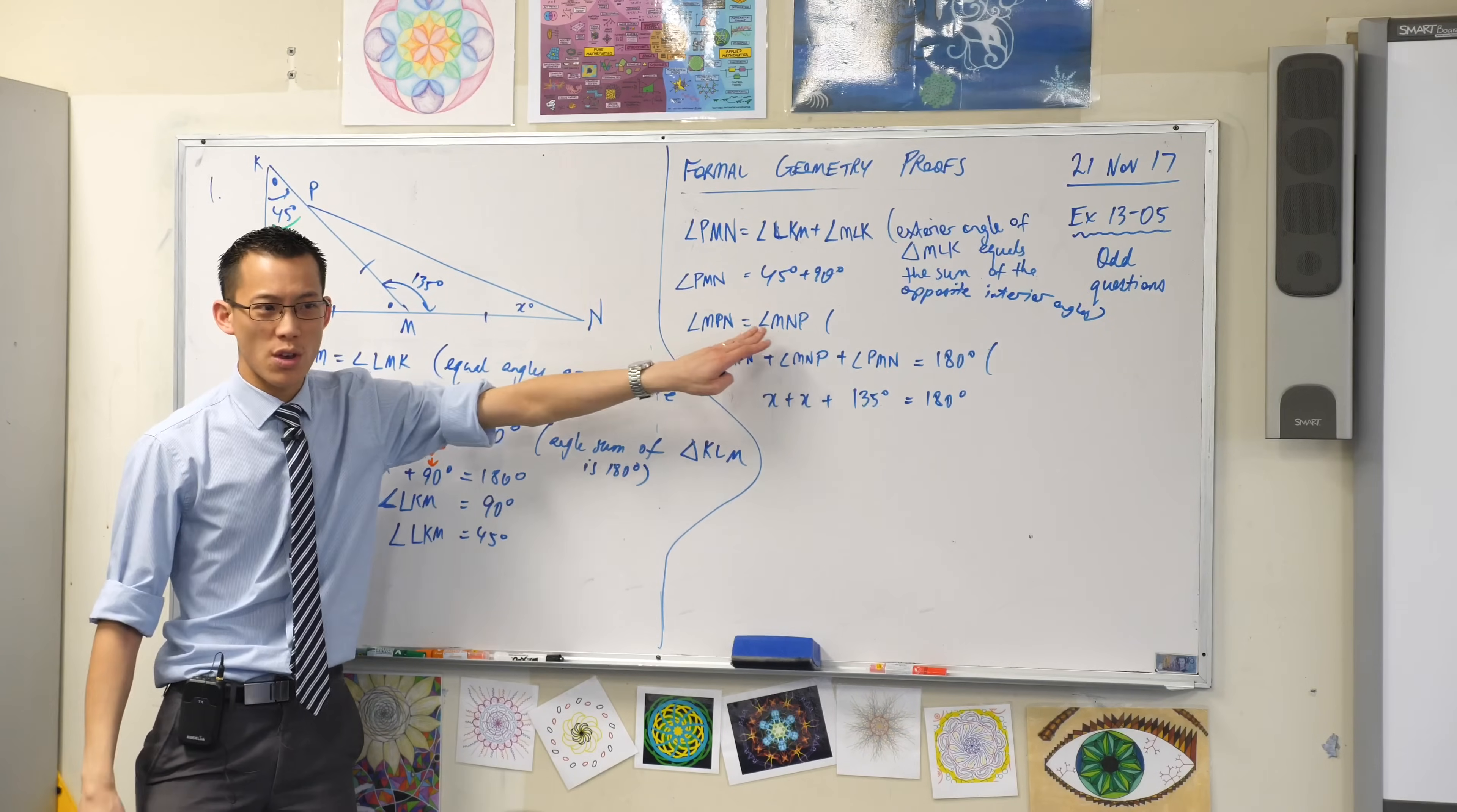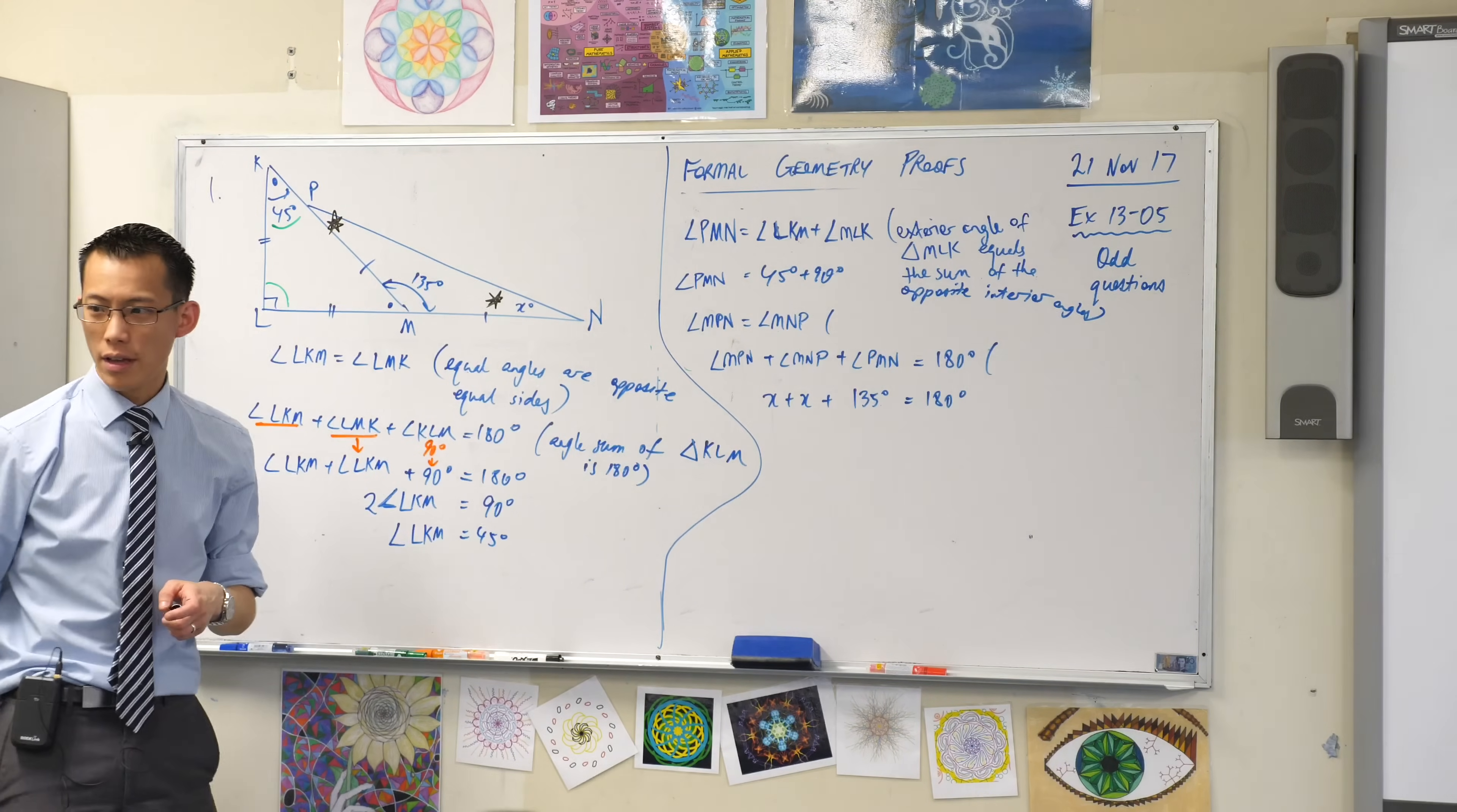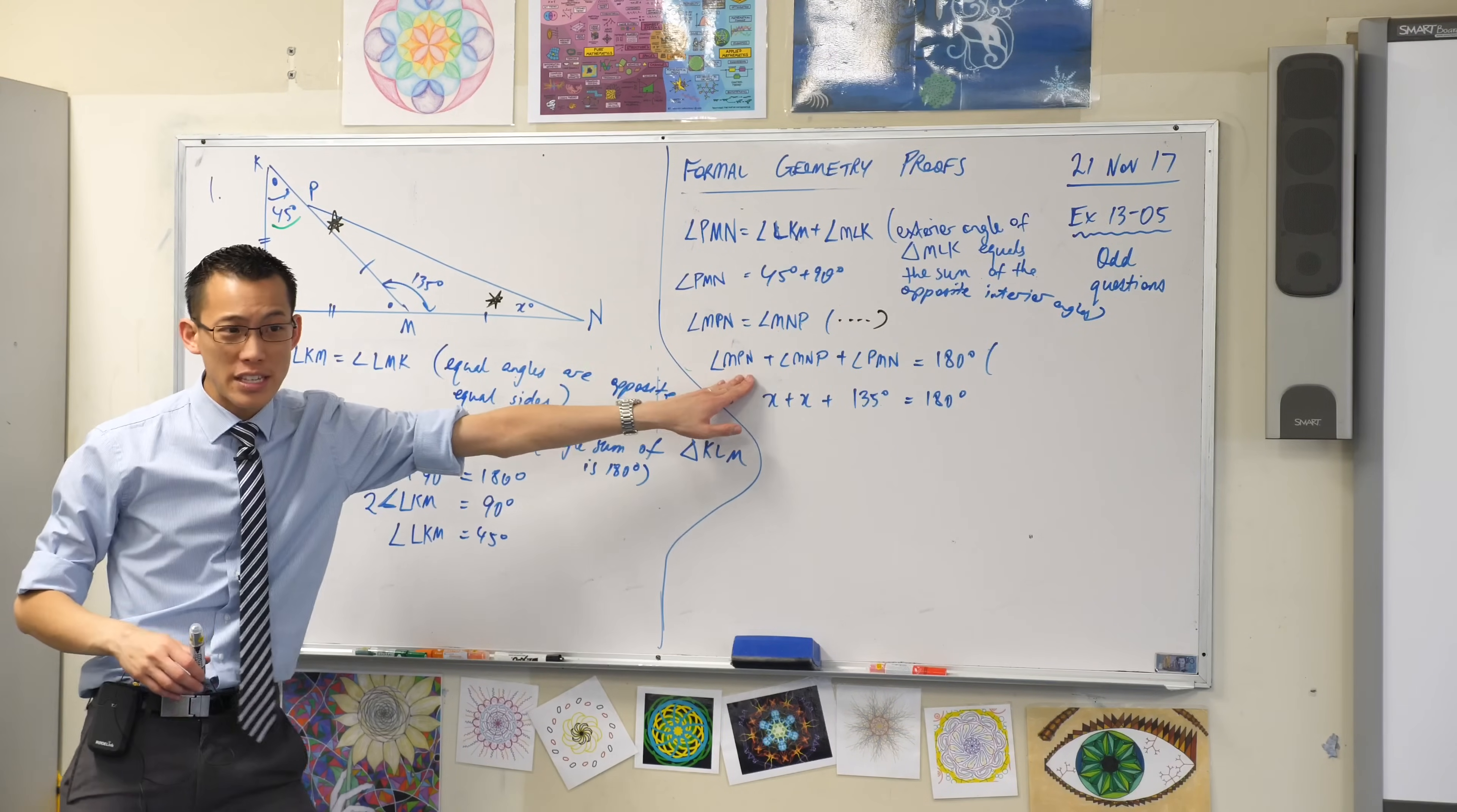I've got these two angles over here, have a look at where I use them. This one, I should put a star or something like that, and this one. Why are they equal? It's a reason I've already used on the board. Equal angles opposite equal sides, you can go ahead, you can write that.